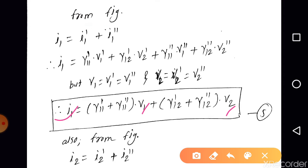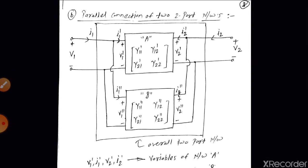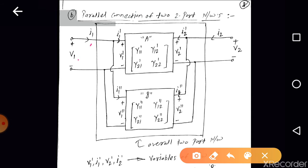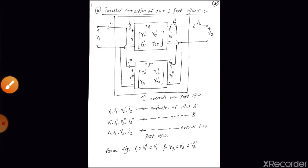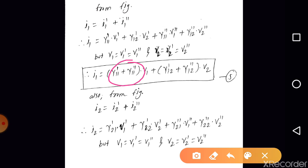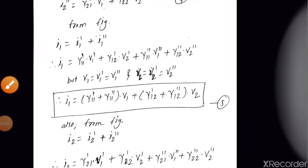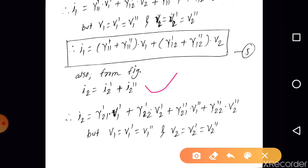This gives us the expression for I1, which is the input port current of the overall two-port network, in terms of V1 and V2 — the port variables of the overall two-port network. We can identify that (Y11-dash + Y11-double-dash) is the Y11 parameter of the overall two-port network, and (Y12-dash + Y12-double-dash) is the Y12 parameter of the overall two-port network.